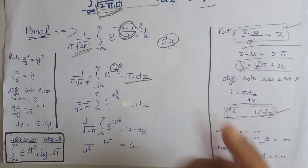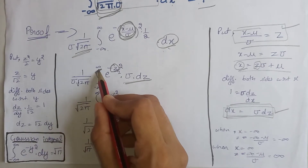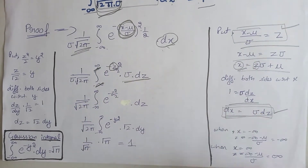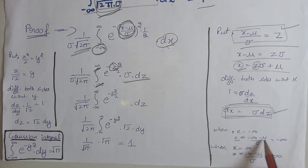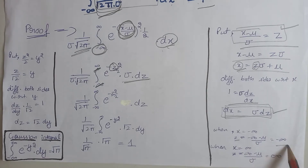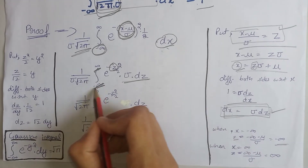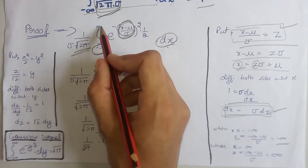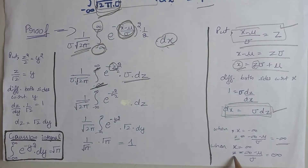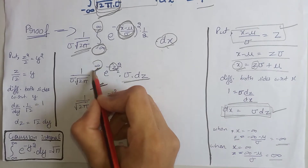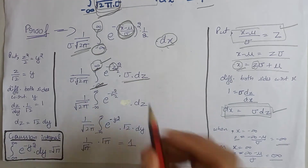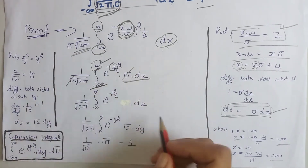Moreover, we have to change these limits according to z. When the value of x is minus infinity, the value of z will be minus infinity minus mu divided by sigma, which is again minus infinity. When the value of x is infinity, the value of z is infinity minus mu divided by sigma, which is again infinity. Next, sigma will be cancelled out by sigma.